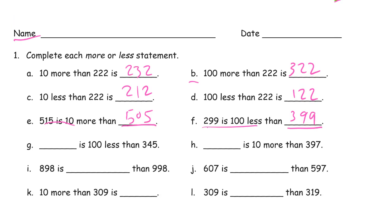And now we have something here is 100 less than 345, that's going to be 245. And something here is 10 more than 397. And that goes over the 100 mark. So that's... but it's only 10 more, so that's going to be 407.